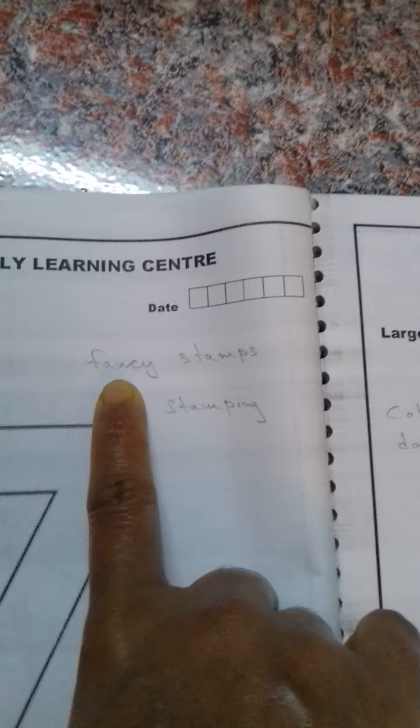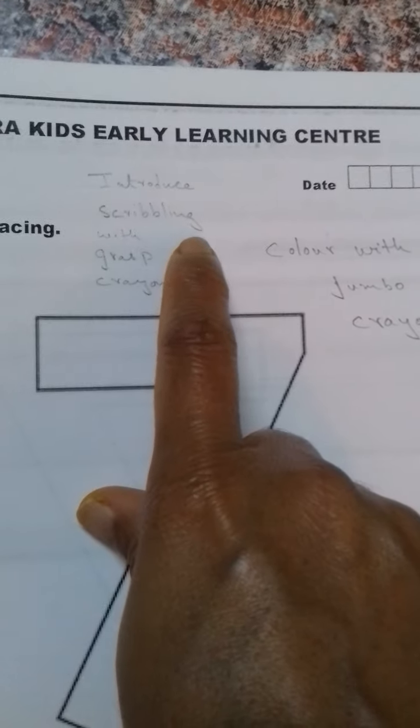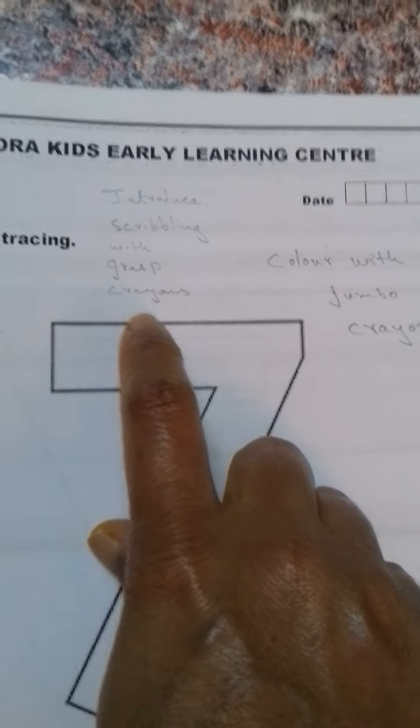Then comes number seven. Here you can give the child fancy stamps for stamping activities, then cotton ball dabbing, or you can also introduce scribbling with grass crayons and ask the child to just scribble.